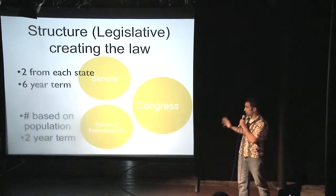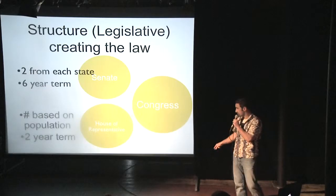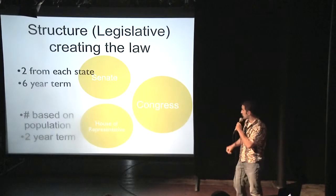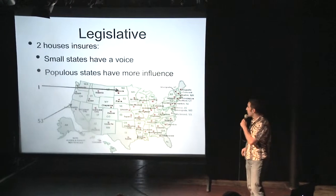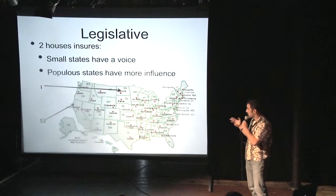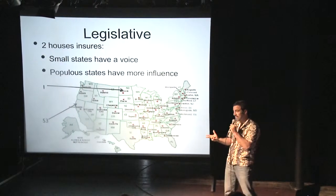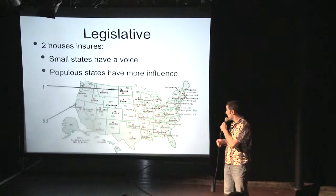Congress has two houses: the Senate, where there are two from each state with a six-year term, and the House of Representatives, which is based on population, and they serve a two-year term. The legislative two-house structure ensures that small states have a voice and the populous states have more influence.